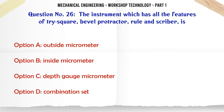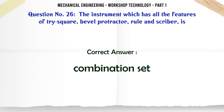The instrument which has all the features of a tri-square, bevel protractor, rule, and scriber is: A. Outside micrometer. B. Inside micrometer. C. Depth gauge micrometer. D. Combination set. The correct answer is: Combination set.